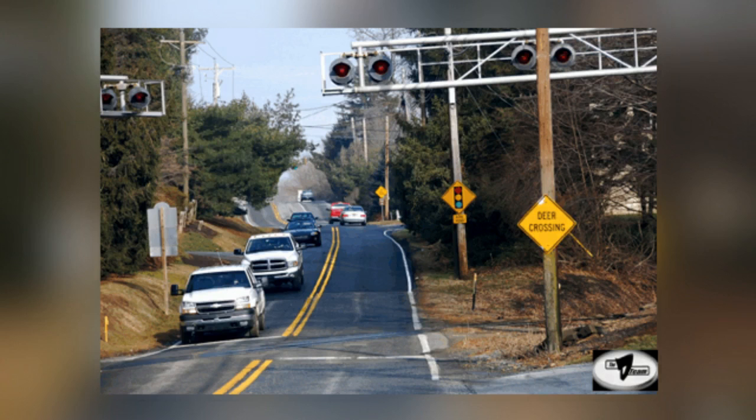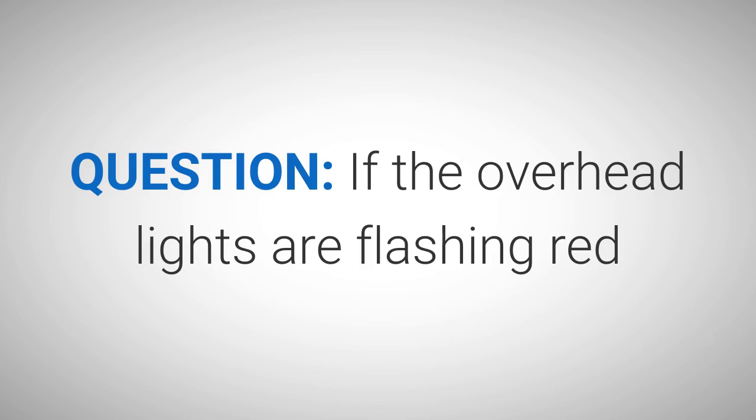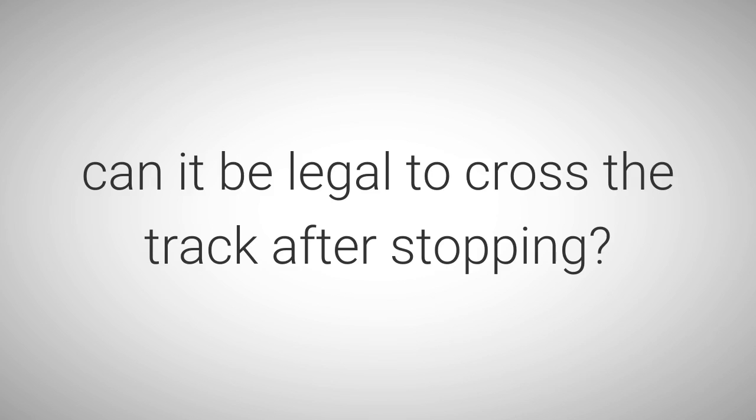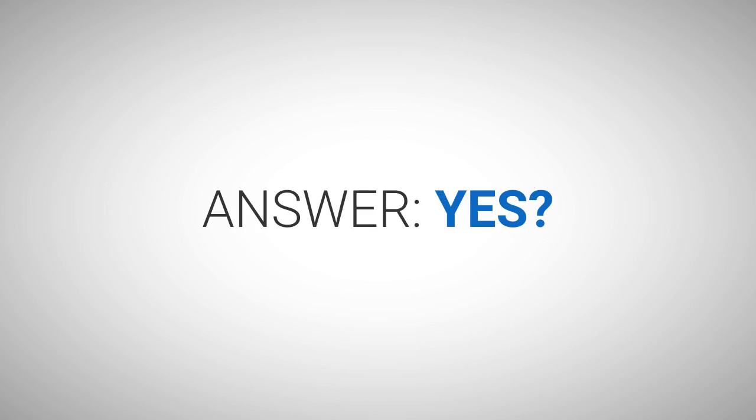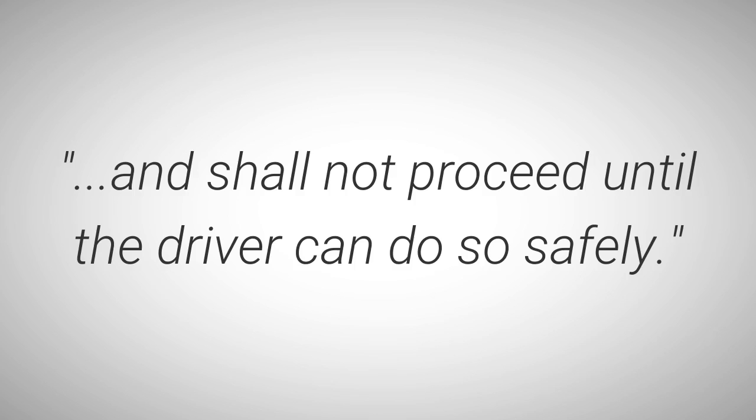Evidently the stop line in picture 8-10 below is a minimum of 15 feet from the nearest rail. So according to Delaware Law, the legal stopping point would be at the stop line. Question: If the overhead lights are flashing red and it is a slow moving train, can it be legal to cross the track after stopping? Answer: Yes. And shall not proceed until the driver can safely do so. We report, you decide.